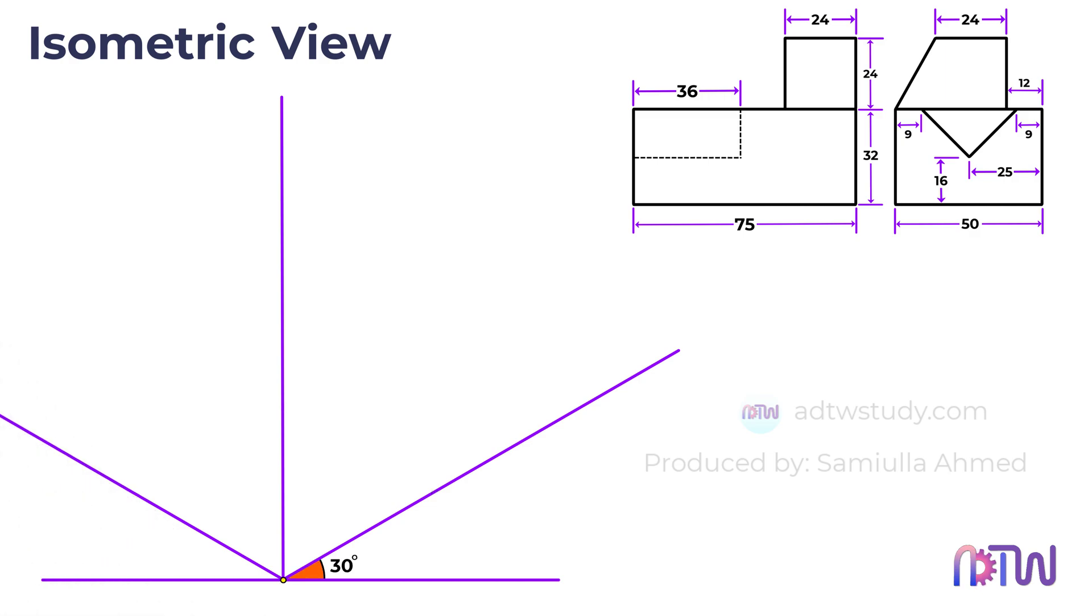The line passing through the 30 degree mark will be the X axis, the line passing through the 90 degree mark will be the Y axis, and the remaining line will be the Z axis. With these three isometric axes in place, we can now construct the isometric view of the object.